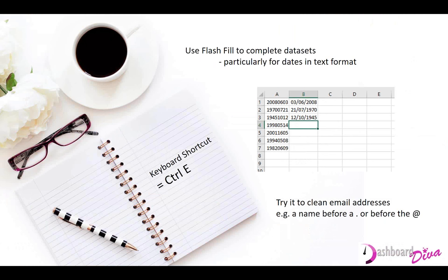Flash Fill is another helpful feature. If you have dates written in a non-standard format, start typing the corrected versions and after two or three entries, grayed-out text will appear showing Excel's guess. Press Enter and the whole column autocompletes. If Excel can't guess, type two or three entries and press Ctrl+E. This works great for tasks like splitting names out of email addresses.